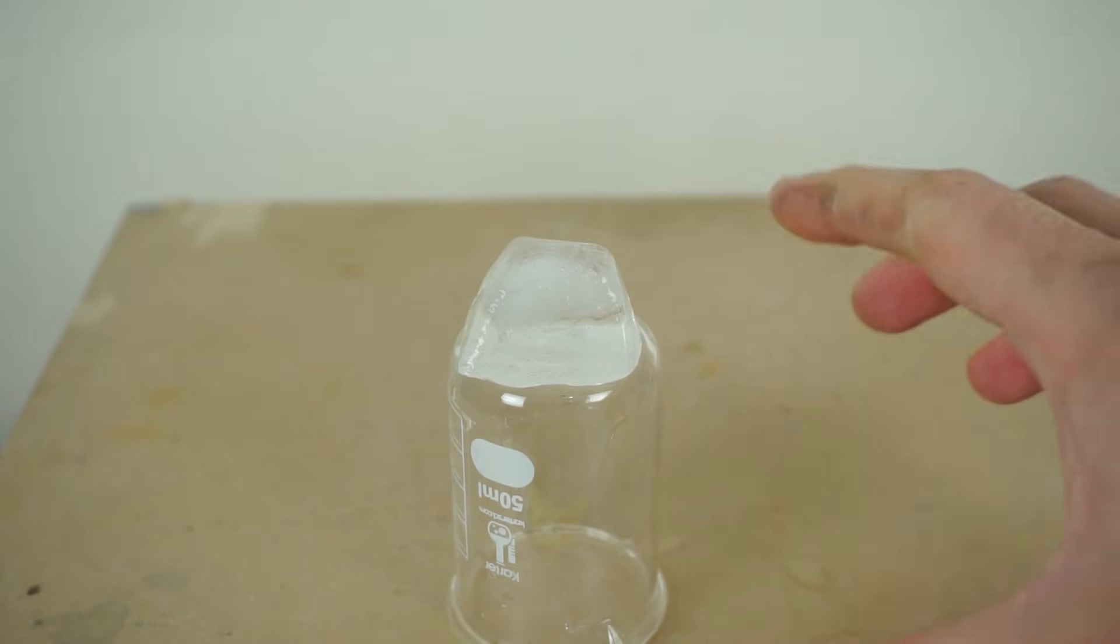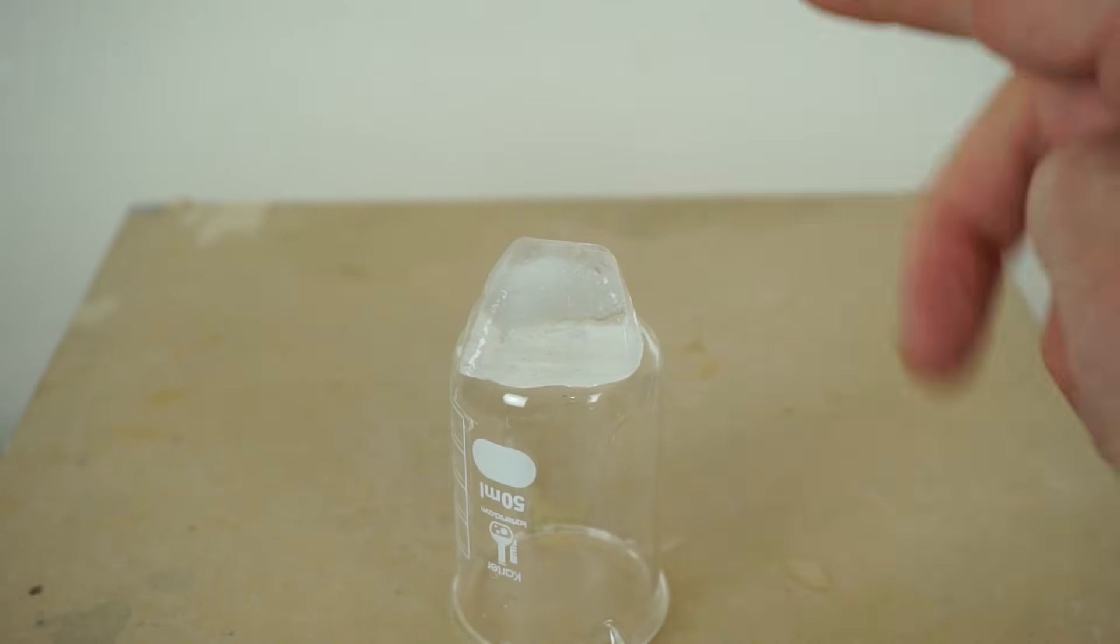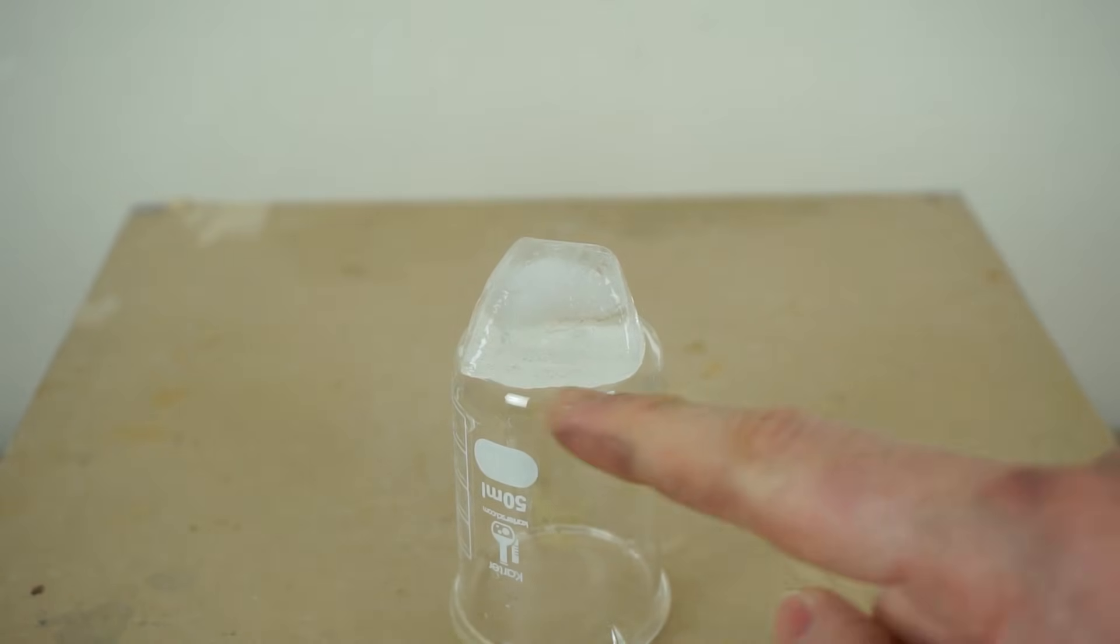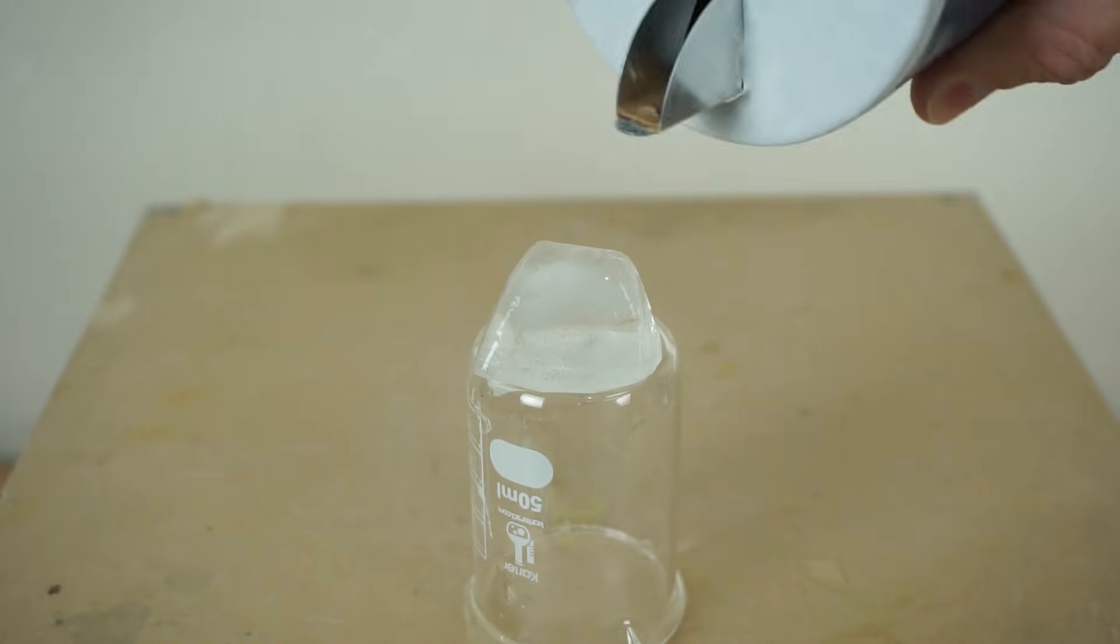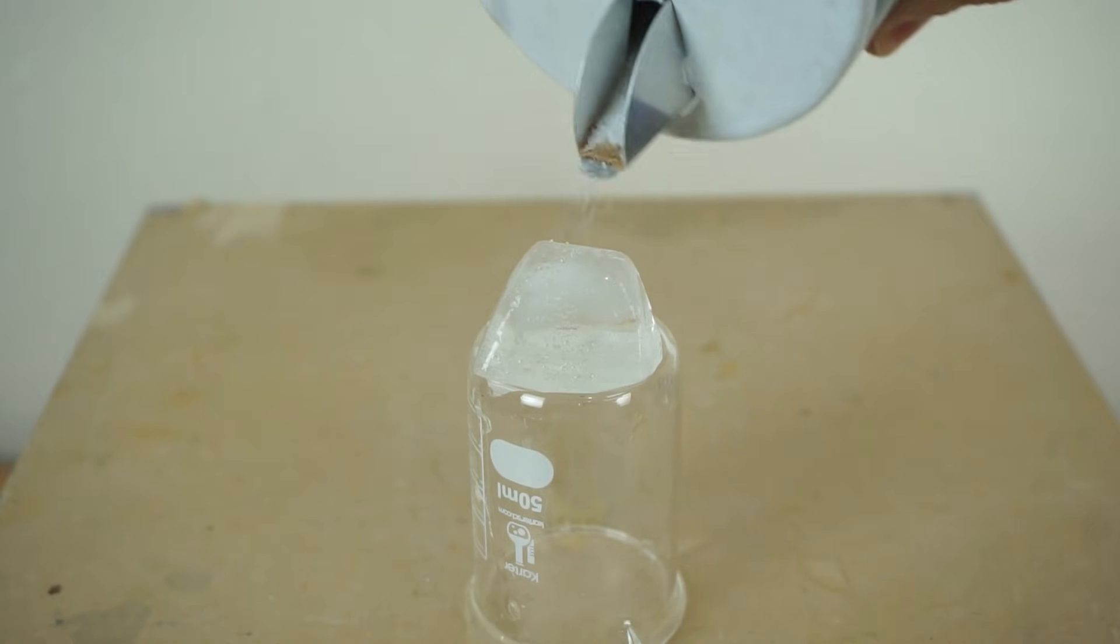So on the surface of every piece of solid ice is a very thin layer of liquid water and they're in equilibrium with each other. Meaning that there's always some liquid turning back into a solid and some solid turning back into a liquid. And when the ice isn't melting or freezing they're always exchanging at a constant rate, so it looks like nothing's happening.